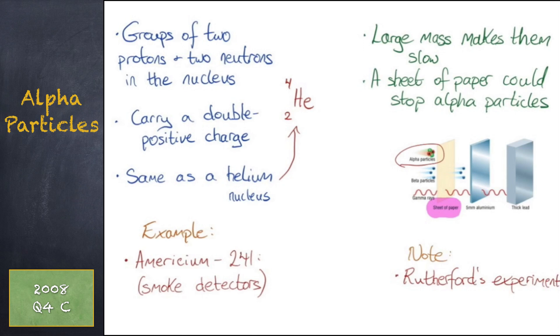Alpha particles can be stopped by a sheet of paper. They cannot penetrate skin, so they are generally harmless to us. Americium-241 is an example of an alpha particle. It is used in smoke detectors.